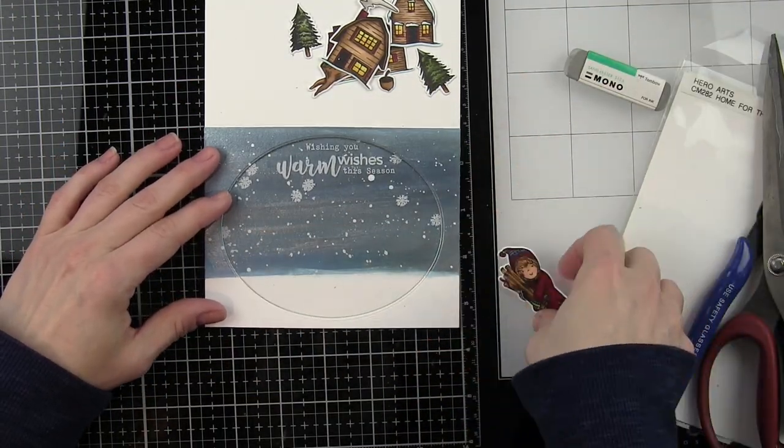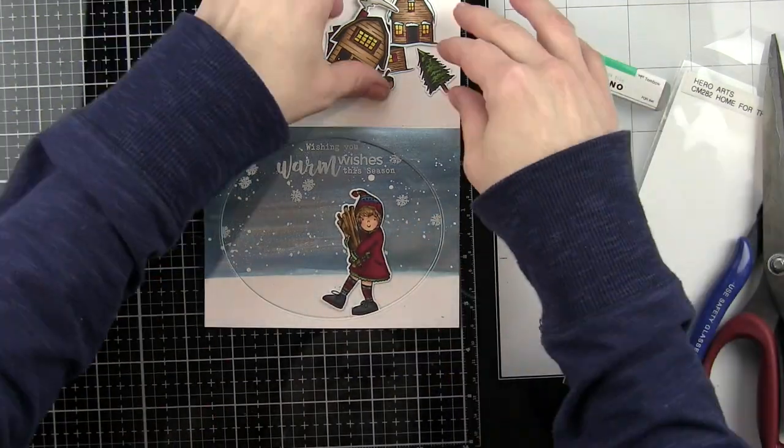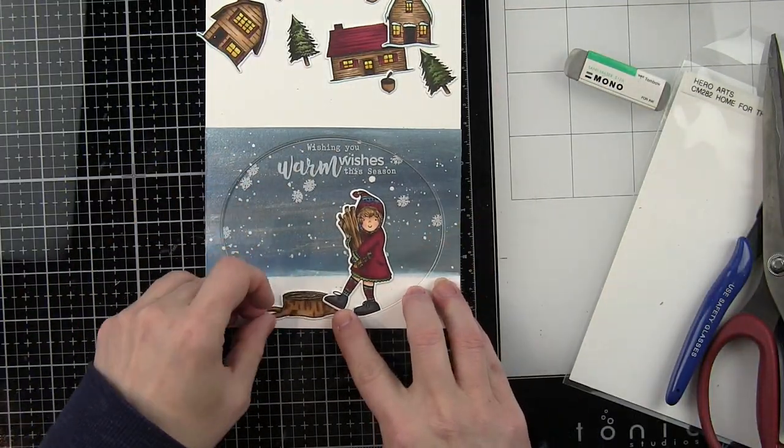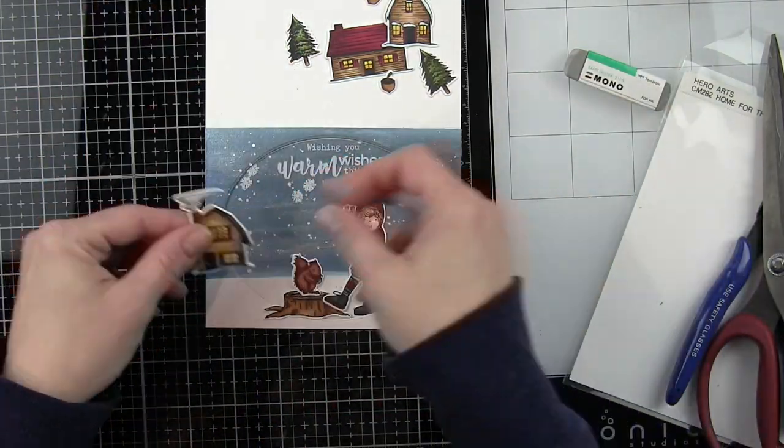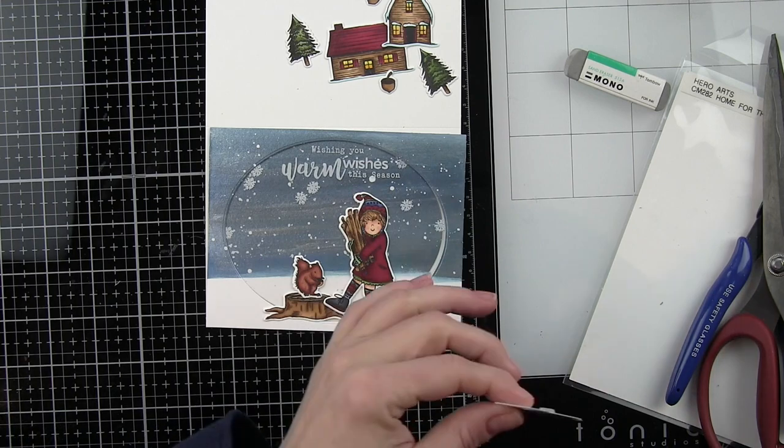And then I'm simply going to take some foam tape and place it around the edges to slightly pop this up. I'm only using one layer of foam tape, but if you wanted to make this a shaker, I would recommend doubling up your foam tape all the way around. It will make your shaker material shake a lot better. With one layer of foam tape, this is still going to be a very easy to mail card.